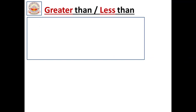Here one box is given. In this, ring the numbers greater than 9. We should ring the numbers greater than 9. Greater than 9 means after 9, what are the numbers that will come? For those numbers we should circle it. Is it clear, children? After 9, what are the numbers that will come? For those numbers we should circle it.